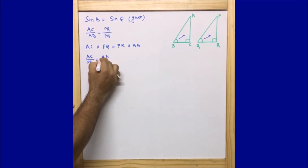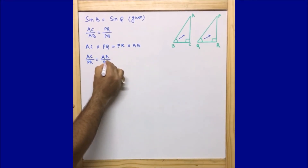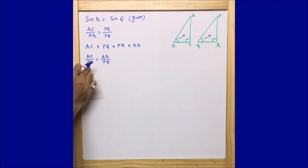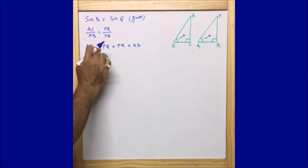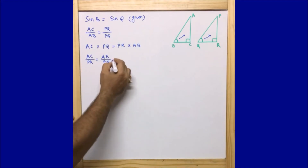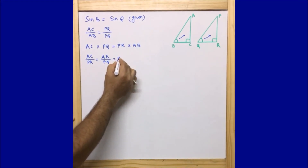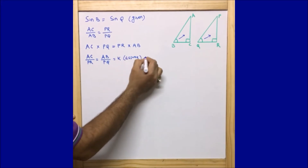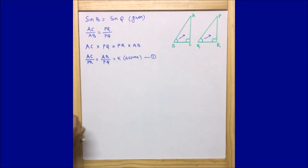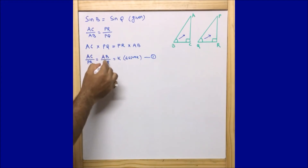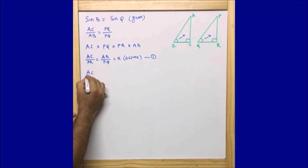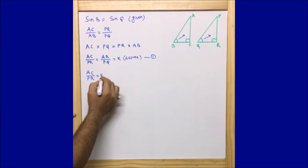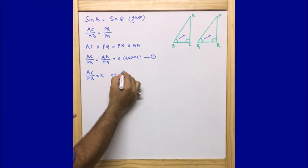Now I can represent this equation by rearranging: AC/PR = AB/PQ. Let this ratio be equal to k. So AC/PR = AB/PQ = k. Let this be equation one.